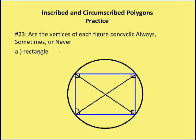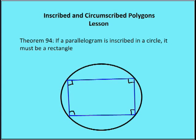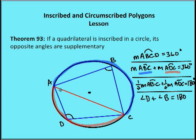So the vertices of a rectangle will always be concyclic. To backtrack, we can recall Theorem 93, which talks about a quadrilateral inscribed in a circle — its opposite angles are going to be supplementary. We proved that by showing these inscribed angles cut out an arc measure equal to 360 degrees, so angles D and B must be supplementary. When considering quadrilaterals, the key question is whether opposite angles are supplementary. If they are, then that figure can be inscribed in the circle and is concyclic.